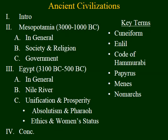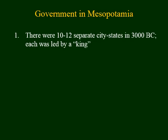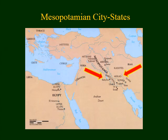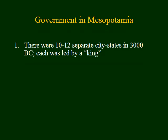We'll now study politics, or how governments were organized in Mesopotamia. In 3000 BC, there wasn't one kingdom that ruled all of Mesopotamia. Instead, there were 10 or 12 separate city-states, each ruled by its own king. The arrows here point to some of those different city-states: Sumer, Lagash, Ur, Eridu, Uruk, Babylon — all different city-states within Mesopotamia.